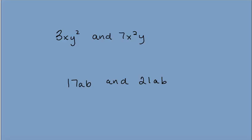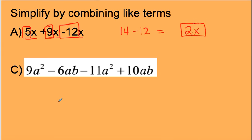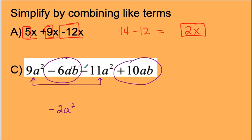If there are like terms, I can combine them, but only the ones that are alike. Here I've got 5X, 9X, and negative 12X — they're alike, so I add or subtract the numerical coefficients: 5 plus 9 minus 12. That's 14 minus 12, giving me 2X. We can also have expressions with multiple sets of like terms. Negative 11A squared and 9A squared are like terms, giving negative 2A squared. Negative 6AB and 10AB are like terms, giving 4AB.